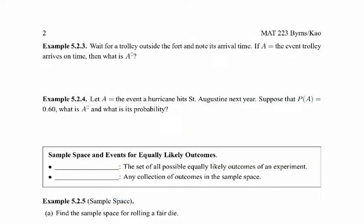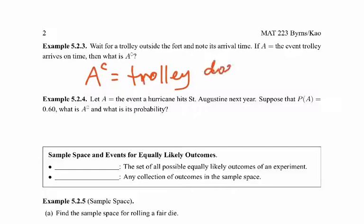Let's take a look at this example. Wait for a trolley outside the fort and note its arrival time. If A is the event that the trolley arrives on time, then what is A complement? That would be the event that the trolley does not arrive on time.